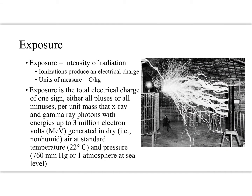Exposure — I always just think about light in air as an exposure. So if I expose a photographic film, I've captured some of that light. Exposure is just a measure of the intensity of radiation in the air. The amount of ionization that produces an electrical charge is measured in coulombs per kilogram, which is the amount of charge produced in a kilogram of air. To really nerd out on this: exposure is the total electrical charge of one sign — either all pluses or all minuses — per unit mass, from x-ray or gamma ray photons with energies up to 3 million electron volts, generated in dry, non-humid air at standard temperature, 22 degrees Celsius, at a pressure of one atmosphere at sea level.